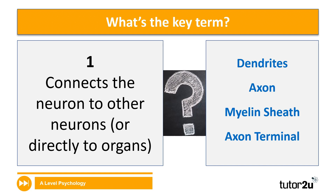We're going to begin with a quick game and you can fill this into question eight — the answers are there as I go through each of these. We're looking for the key term related to the definition on the left. First, we've got 'connects the neuron to other neurons or directly to organs' and the possible terms are dendrites, axon, and myelin sheath. Take a moment to think about what the answer is.